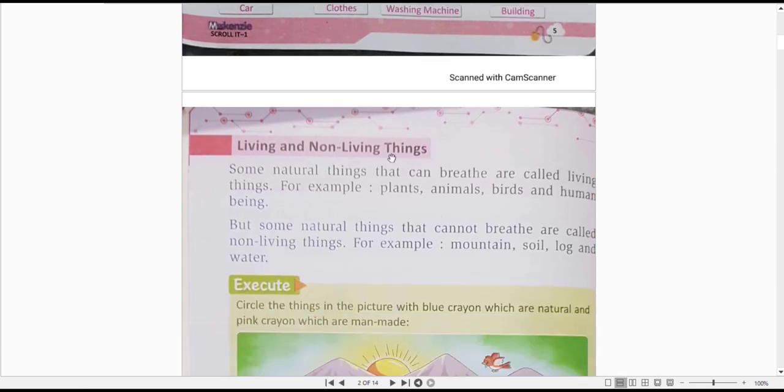Living and non-living things. Now we will go to living and non-living things. Some natural things that can breathe are called living things. For example: plants, animals, birds, and human beings.